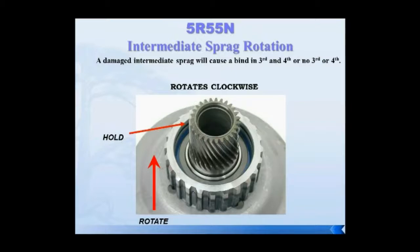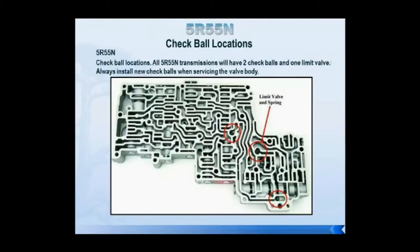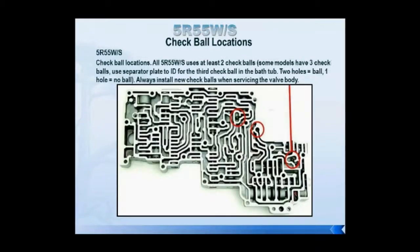There are primary differences between the different versions of the 5R55. For example, the check ball locations differ — the N transmission uses two check balls and a spring-loaded limit valve assembly in certain locations. Those check ball locations are different compared to the S transmission, which uses check balls in different positions. The W and S also differ from the N. Make sure you know which transmission you have so you know where the check balls go.